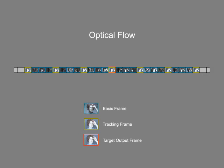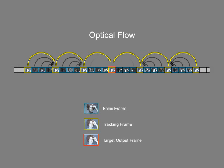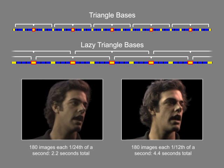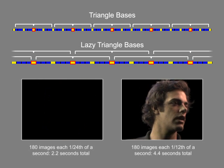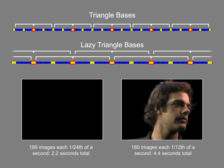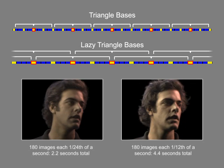To warp the images, we first compute optical flow between the tracking frames. We interpolate this flow to warp each basis frame to the nearest tracking frame toward the target output frame. Then we apply a second warp to transform the frame all the way to the target output frame. The optical flow is robust enough that we can slow the repetition of the basis to half that of the original frame rate.